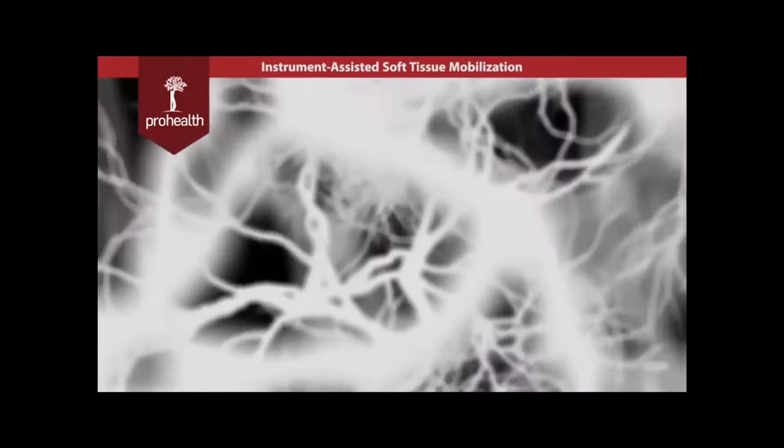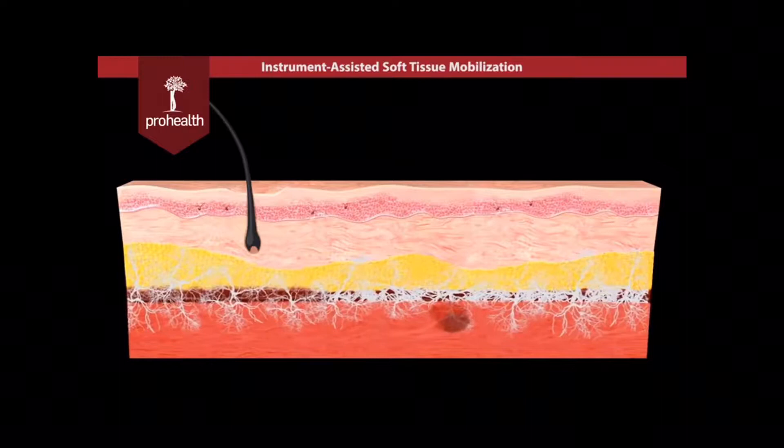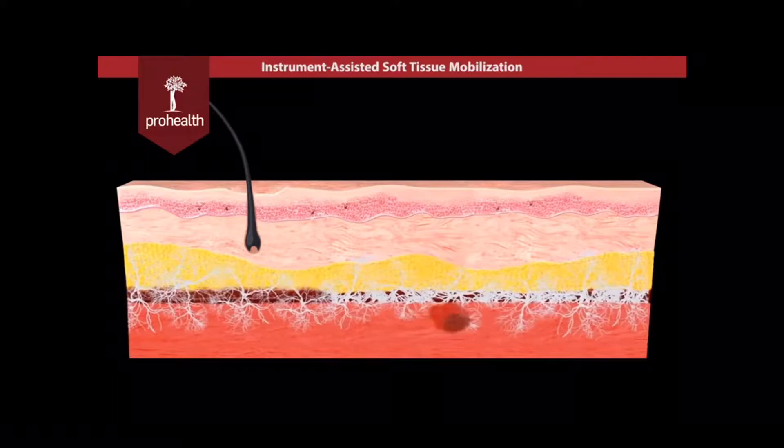In a healthy system, muscles are able to slide without restriction. However, following an injury, fibroblasts lay down more collagen and increase the fascial density creating adhesions — some people refer to this as scar tissue — which limits the function and range of motion of the muscles, joints and other tissues in the region.